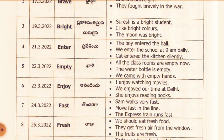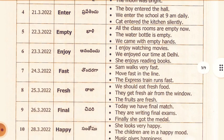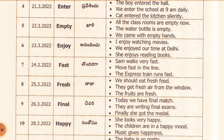24th March: Fast. Telugu meaning: Tundaraga. Sam walks very fast. Move fast in the line. The express train runs fast. 25th March: Fresh. Telugu meaning: Taja. We should eat fresh food. They get fresh air from the window. The fruits are fresh. 26th March: Final. Telugu meaning: Chivari. Today we have the final match. They are writing final exams. Finally, she got the medal.